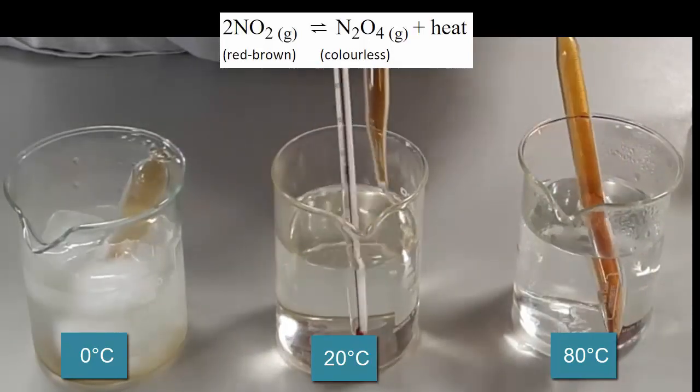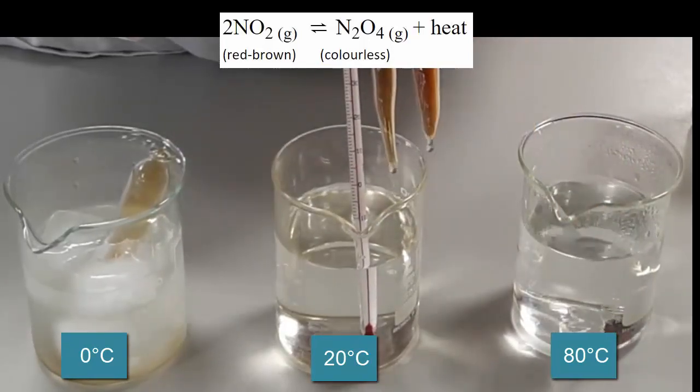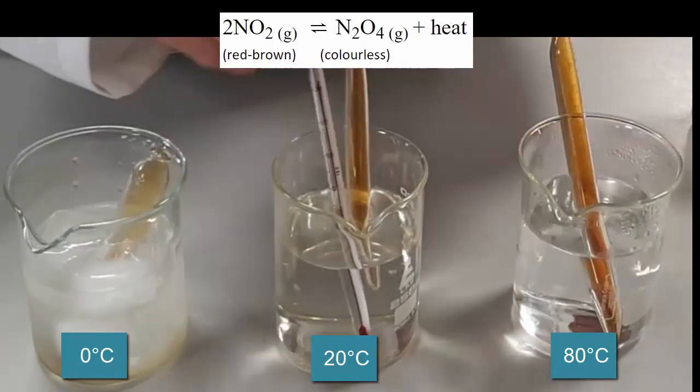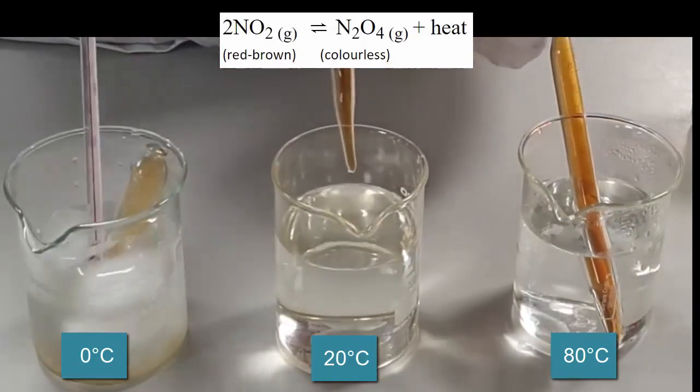And so you can see that removing heat pulls it to the right hand side, which is colorless, and adding heat pulls it to the left hand side, which makes it darker.